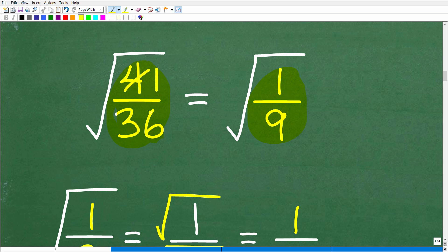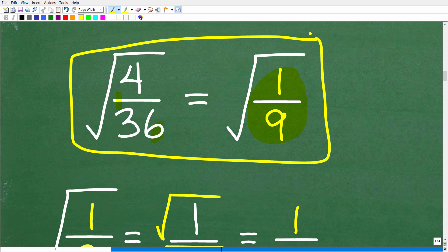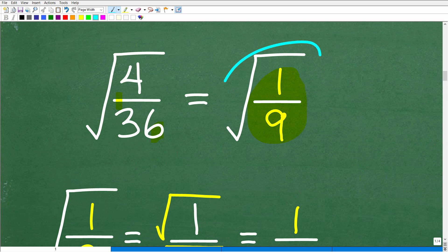So we'll take this 4 over 36 and reduce it down to 1 over 9. 4 goes into 4, 1, and 4 goes into 36, 9. So the equivalent problem here, let me just erase all this. If I'm faced with the square root of 4 over 36, I can choose to do this problem, the square root of 1 over 9. These are what we call equivalent problems. They're equal, mathematically equal. So you always want to make your life as easy as possible.